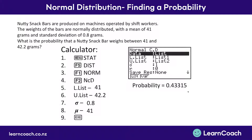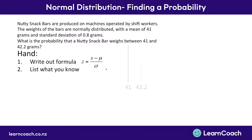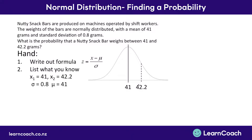Now let's see how we would answer the same question by hand using our formulas and the z-table. First, write out the z-score formula — this is the only one we need for normal distribution. Then list what we know: a bell curve with a mean of 41, and we want the z-score between 41 and 42.2 grams. We know our standard deviation is 0.8 and our mean is 41 grams.